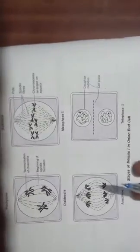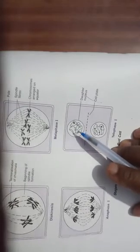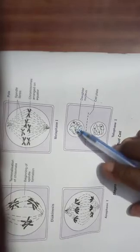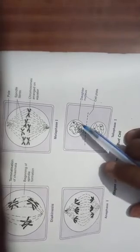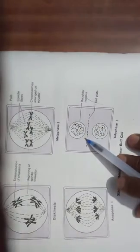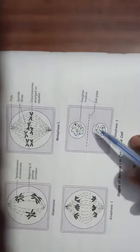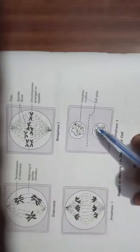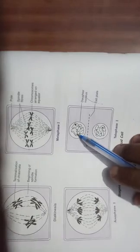In Telophase I, the chromosomes at each pole start uncoiling, and the nucleolus and nuclear envelope reappear. Cytokinesis occurs to form two haploid daughter cells. After this, interkinesis takes place.